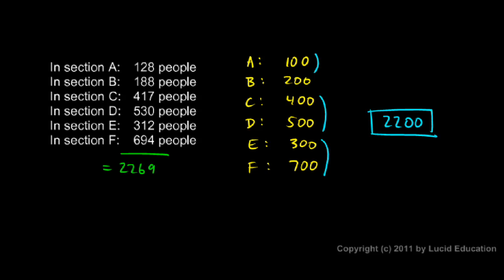So the rounding introduces an inaccuracy in your answer. But if some of the numbers are rounded up and some of the numbers are rounded down, those inaccuracies tend to cancel each other out. Not necessarily exactly, but they tend to cancel each other out.